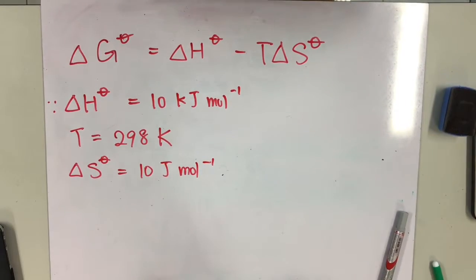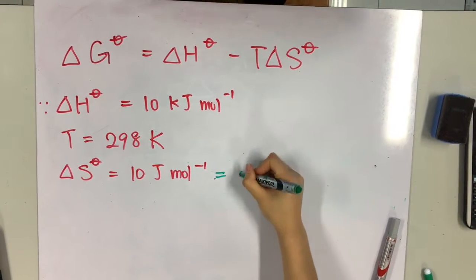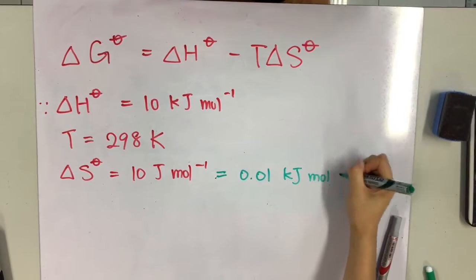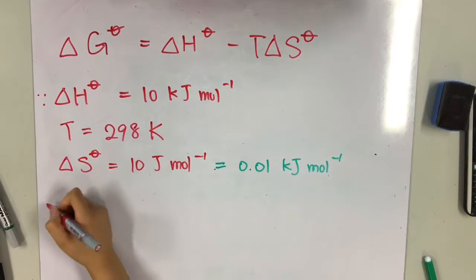In order to keep all the units consistent, we need to convert delta S from joules per mole to kilojoules per mole, which gives us 0.01 kilojoules per mole.